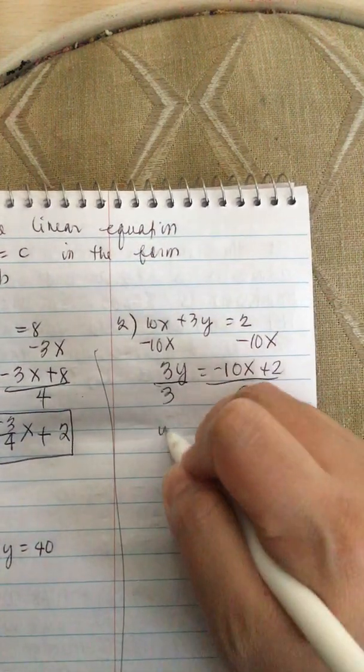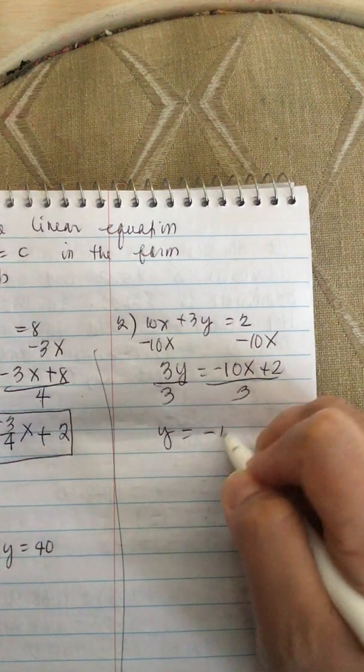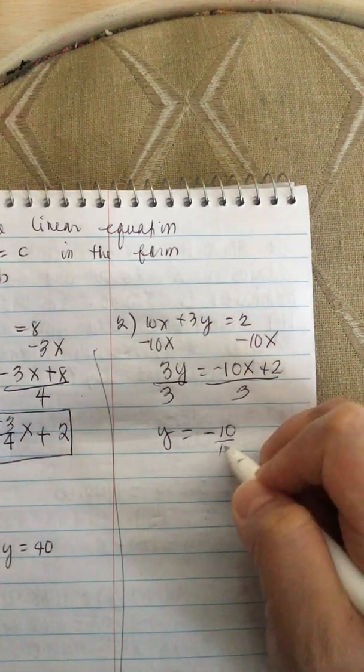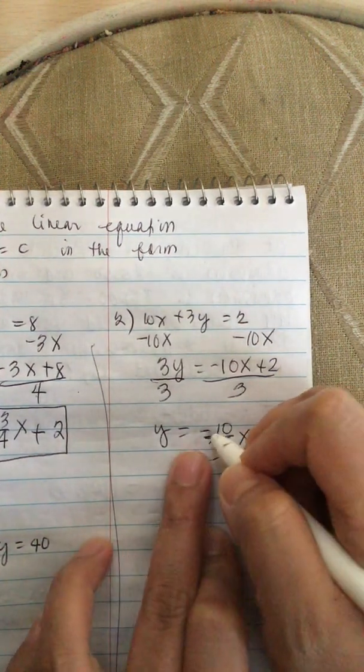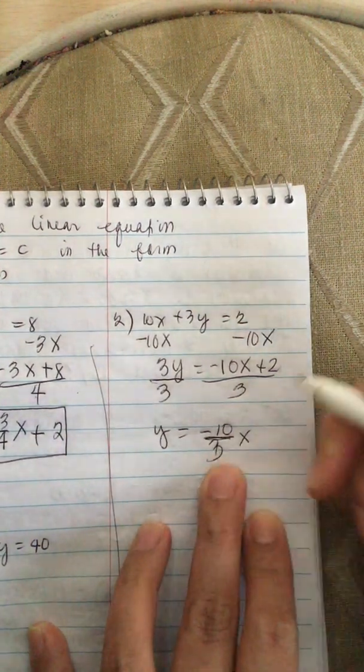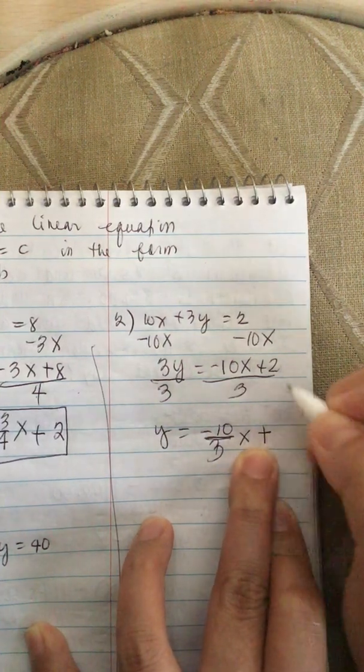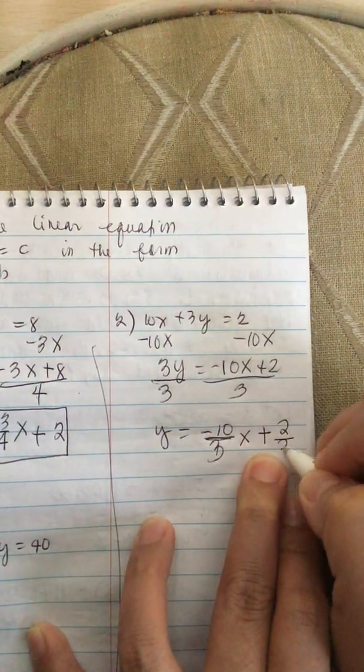So now we have Y is equal to minus 10 over 3X plus 2 over 3.